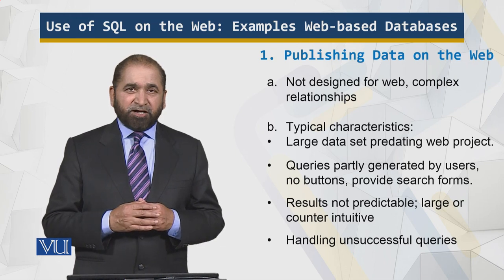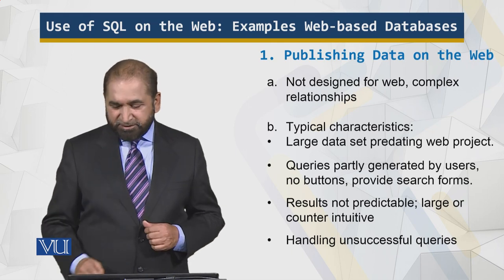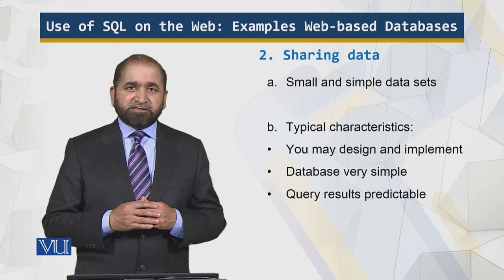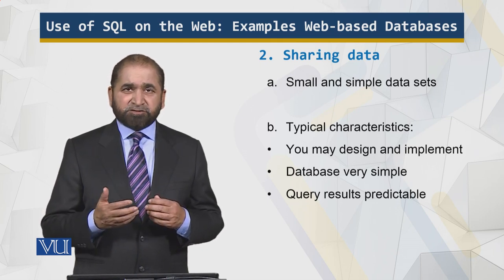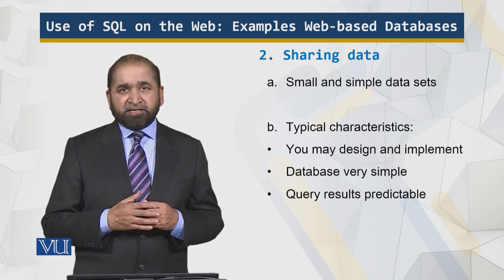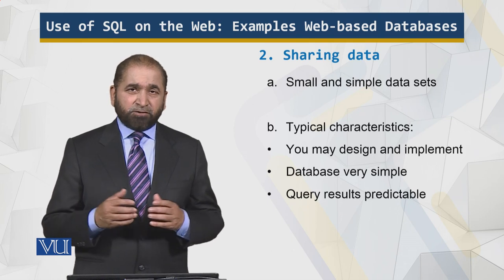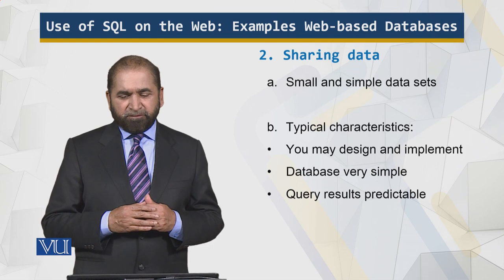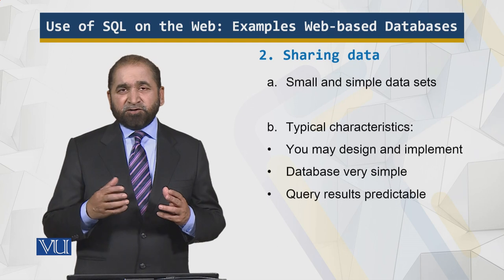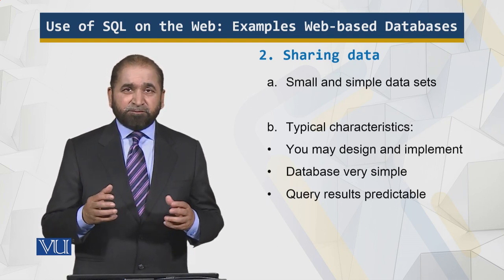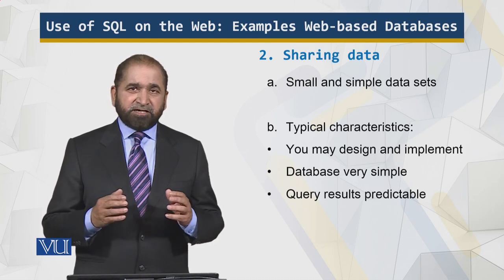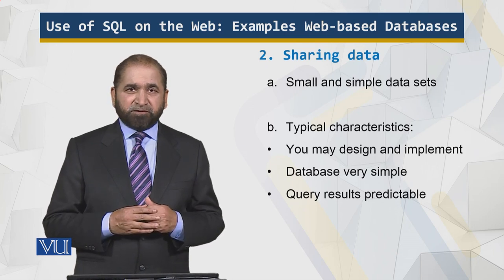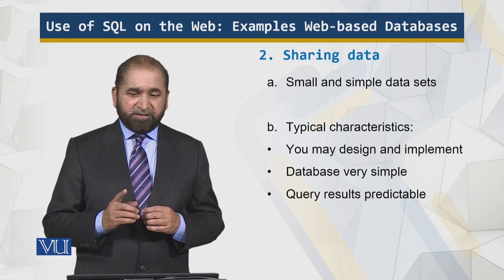Now let's go into more details about those examples and applications of connecting the database to the web. The simplest one is sharing of the data. We would like to share the data, and the dataset is small and very simple — it could be office memos, queries, and those kinds of things. It's a simple database, not very large, and doesn't consist of hundreds and thousands of transactions. You can develop that database on your own, and the query results are also predictable — not going to be hundreds and thousands — because that is not the number of office memos being searched, and the words being searched comprise standard words used in an office environment. So there is very little unpredictable part.